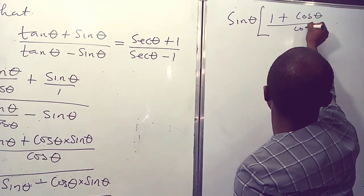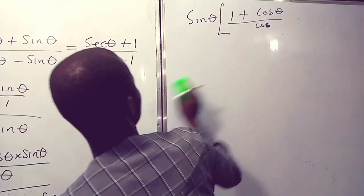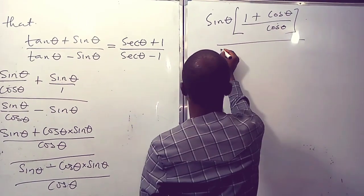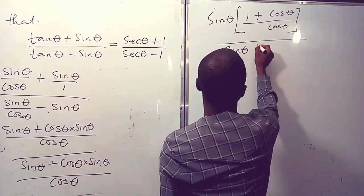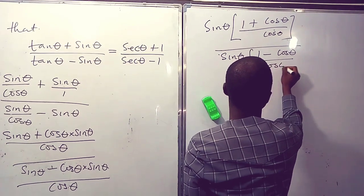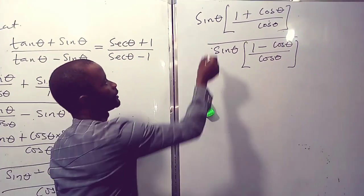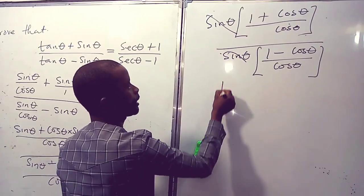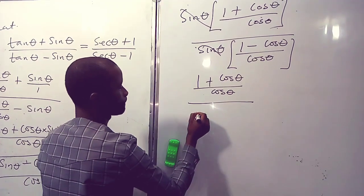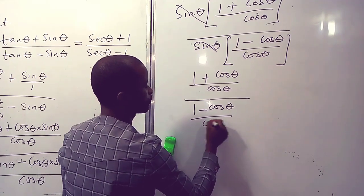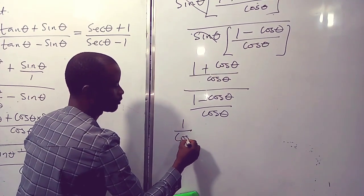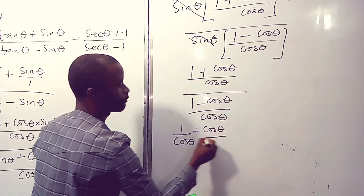Similarly, the denominator also has sine theta as a common factor: sine theta times open bracket one minus cos theta, all over cos theta. We can now cancel the common factors — sine theta cancels from numerator and denominator, and cos theta cancels as well.